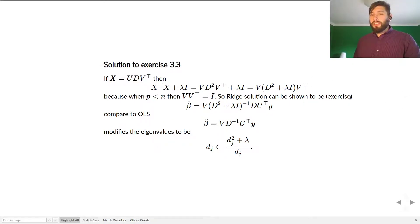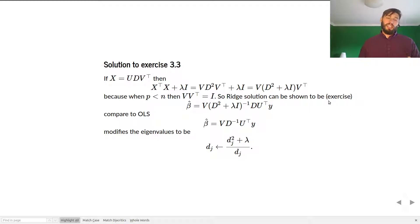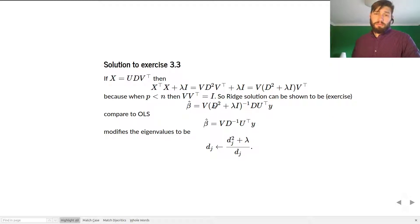The ridge solution can be shown to be the following: beta hat is equal to V times D squared plus lambda I inverse times D times U transpose times Y. You can verify this on pen and paper yourself, in the same way that we derived the OLS form.